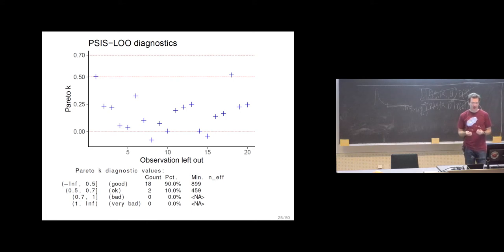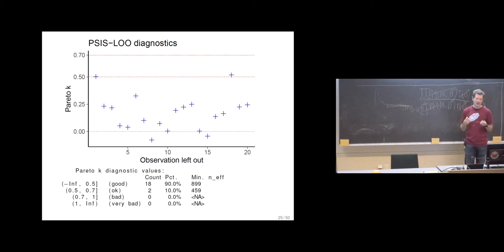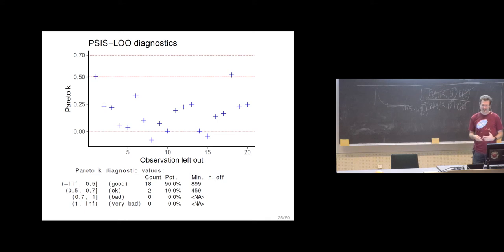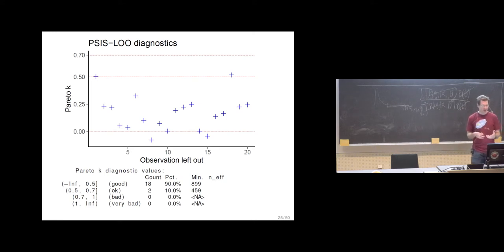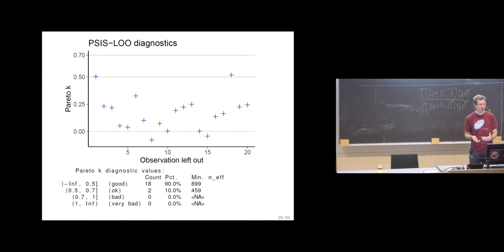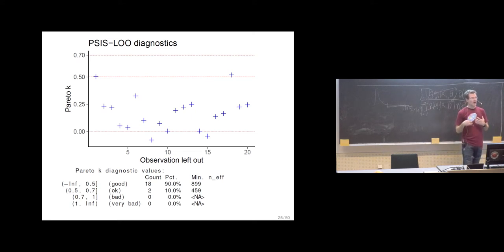The Pareto k̂ diagnostic is based on finite number of draws and works well as a pre-asymptotic diagnostic. There are cases where by construction we can know that the variance is actually finite, but even then we might see, in finite samples, Pareto k̂ estimates which are larger than 0.5. This can be explained because with finite data we are not able to see the difference between the infinite variance or finite variance case. Anyway, at that point we just know that we would need a very large number of draws before we could know whether the variance is actually finite — but we know it's going to be really big regardless.